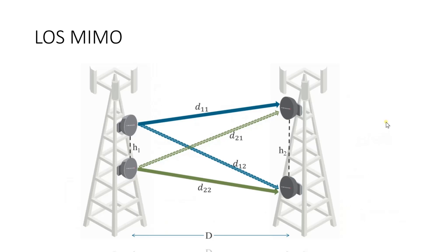Finally, LOS MIMO — Line-of-Sight MIMO. We all know MIMO is used in non-line-of-sight environments, predominantly in the RF world between UE and the radio unit. Now we have started using MIMO in microwave line-of-sight environments as well. Multiple bit streams are sent over the same channel using spatial multiplexing. I have a separate video discussing LOS MIMO in detail; here we'll cover it briefly.